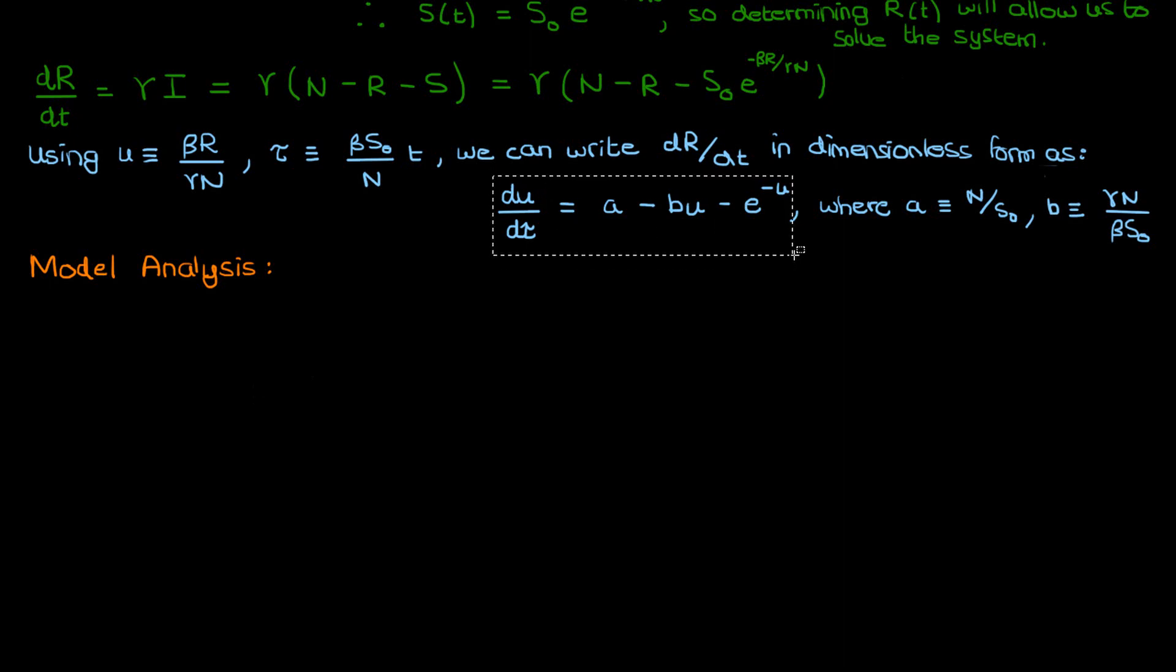Let me copy-paste the dimensionless differential equation, which represents the number of people who have died in the epidemic, U, as a function of the dimensionless time tau. It should make sense to you that the constant A has to be greater than or equal to 1. The reason for this is that by the definition of A, A equals the total size of the population N divided by the number of people who were initially healthy, S0.